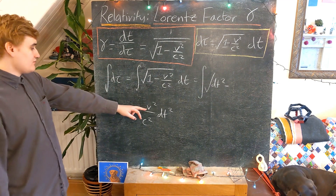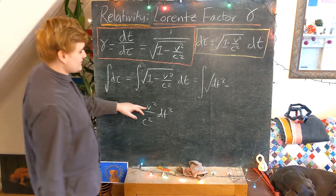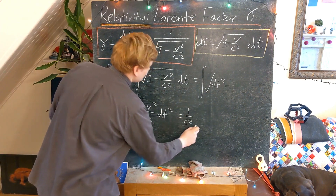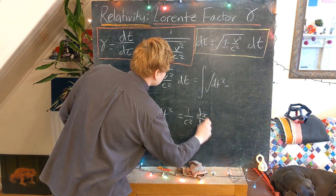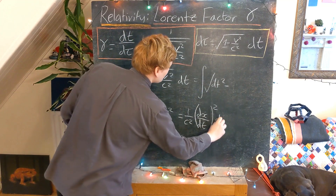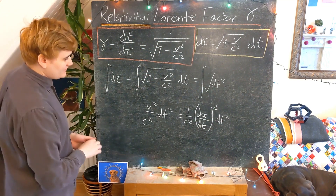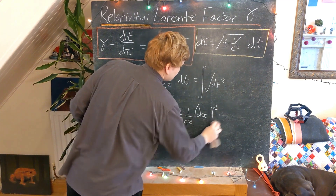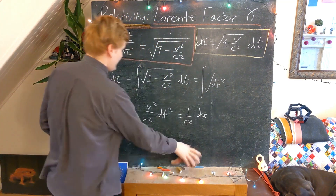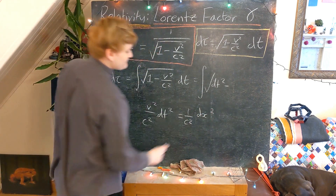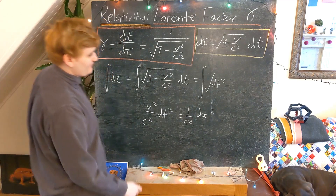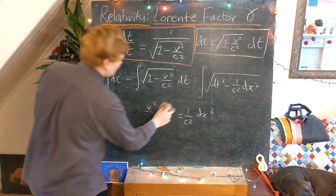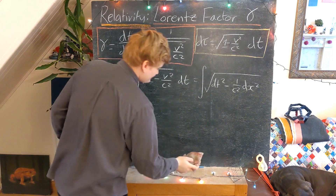Pulling the dt into the root, it gets squared, so we have a dt squared. Now we need to work out what v² over c² times dt² is going to be. I can rewrite v — the coordinate velocity — as dx/dt. So I can write this whole thing as (1/c²)(dx/dt)² dt². Fairly naively, we can cancel these dt squareds and realize that v² dt² / c² is just going to be (1/c²) dx². This is now starting to feel quite familiar.